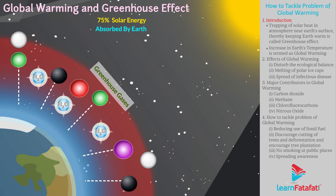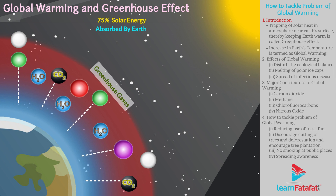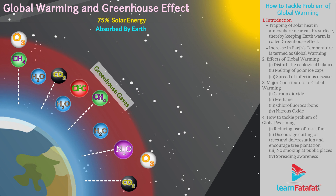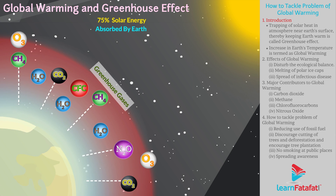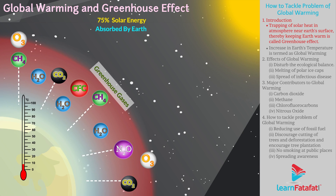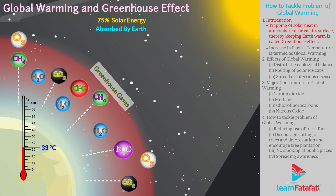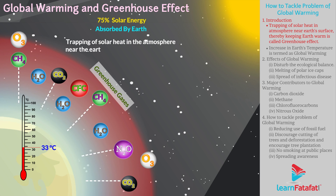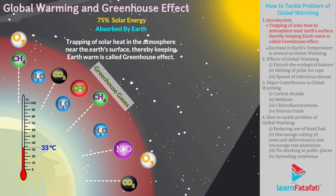These gases include water vapour, carbon dioxide, methane, ozone, chlorofluorocarbons, and nitrous oxide. The energy absorbed by these gases causes heating of the atmosphere near earth's surface. This process helps to maintain earth's temperature at around 33 degrees centigrade and helps life to survive on this planet. Such trapping of solar heat in the atmosphere near the earth's surface, thereby keeping earth warm, is called the greenhouse effect.